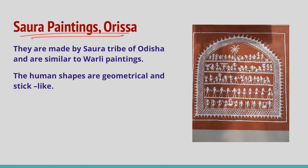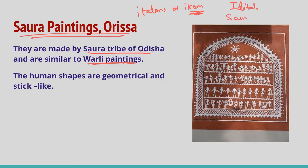Saura wall paintings are made by the Saura tribe of Odisha and are similar to Warli paintings. They are called Itals or icons and are dedicated to Idal, the main deity of the Sauras. The paintings are done mostly in white while the background is red or yellow. Colors are extracted from minerals and plants, and human shapes are geometrical and stick-like.